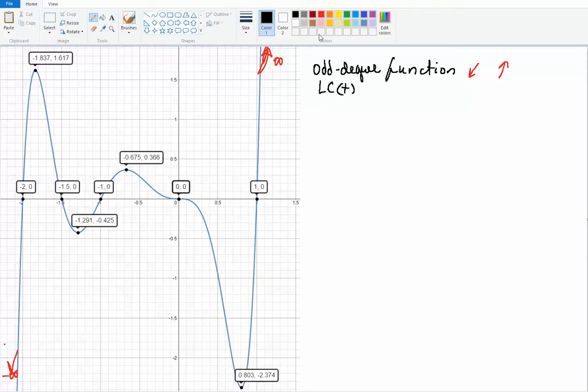Now, something else that I can ask you for is the x-intercepts. So the x-intercepts is where you cross the x-axis, and that would be this one, right here, here, here, and here.